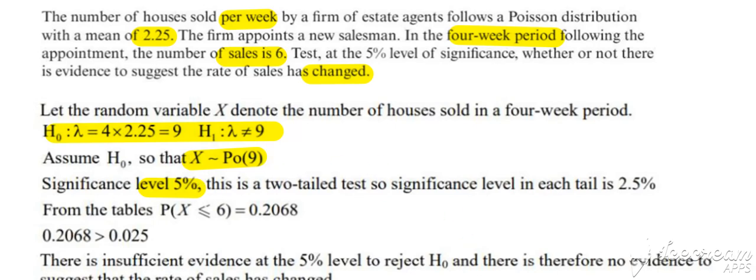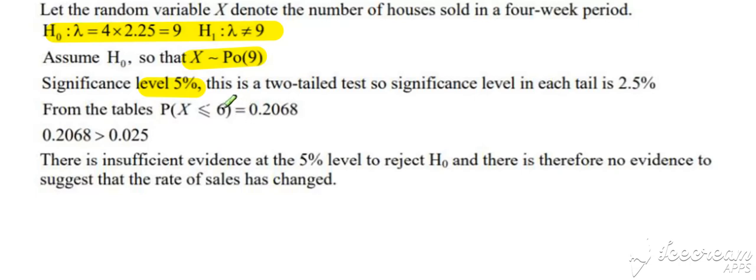So our evidence is 6. We would be expecting 9, so we go for less than or equal to as our inequality. Always go for the evidence or further away from what you would expect. Pick up your probability then from your calculator, and then you just need to compare it with half the significance level because it's a two-tailed test.